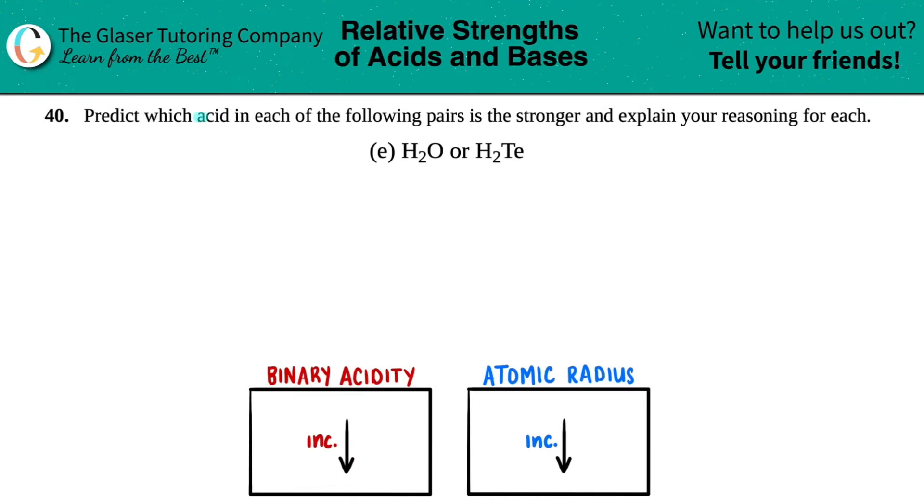Number 40: Predict which acid in each of the following pairs is the stronger and explain your reasoning for each. We have letter E, so we have to figure out which one is the stronger acid: H₂O or H₂Te.